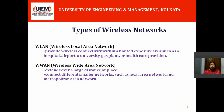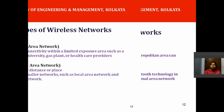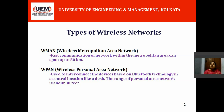WWAN — Wireless Wide Area Network — as the name suggests, the network is very wide, not local. It extends over a large distance and connects different smaller networks such as local area networks and metropolitan area networks. WMAN — Wireless Metropolitan Area Network — enables fast communication within the metropolitan area and can span up to 50 kilometers. WPAN — Wireless Personal Area Network — is used to interconnect devices based on Bluetooth technology in a central location, with a range of about 30 feet.